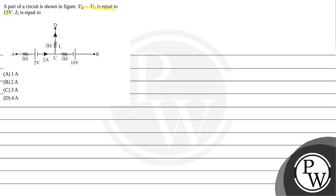So I1 is equal to: option A, 1 ampere; option B, 2 amperes; option C, 3 amperes; and option D, 4 amperes.